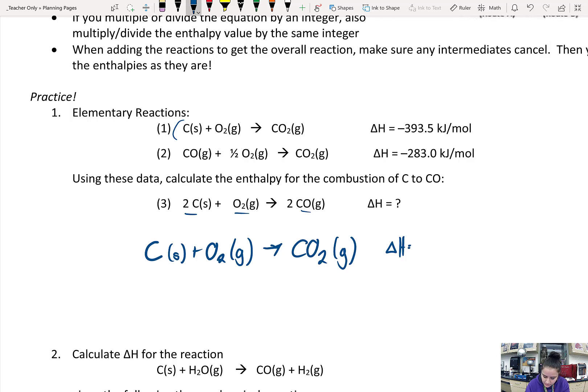So when I write that reaction and the delta H value for that reaction, in order to get it to the target, I know I'm going to have to multiply the whole thing by 2. So I'm going to multiply the whole reaction by 2 and multiply the delta H value by 2, which gives me the new delta H value of negative 787 kilojoules.